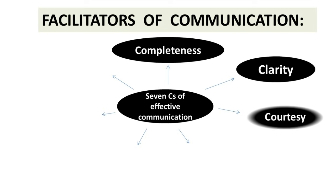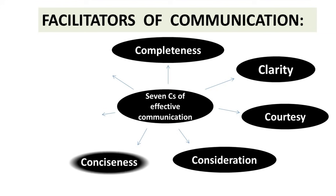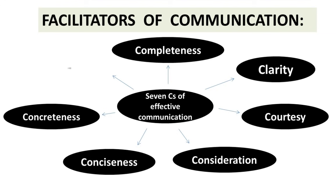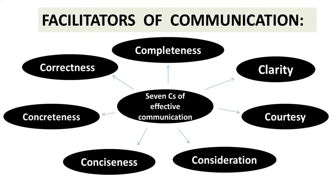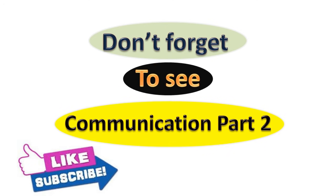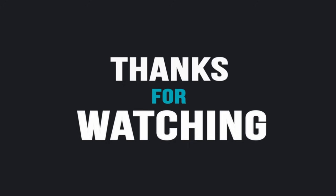Next we will move toward facilitators of communication — the seven C's of effective communication: first, completeness; second, clarity; third, courtesy; fourth, consideration; fifth, consciousness; sixth, concreteness; and seventh, correctness. These are all facilitators of communication. With this we have completed the first part of communication. For nature, importance, objective, barriers of communication and process of communication, don't forget to watch the next part — communication part 2. Have a nice day. Thank you.